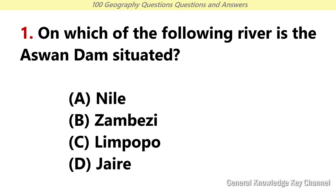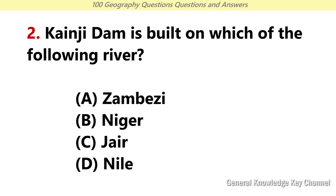On which of the following rivers is the Aswan Dam situated? Answer A: Nile. Kanji Dam is built on which of the following rivers? Answer B: Niger.